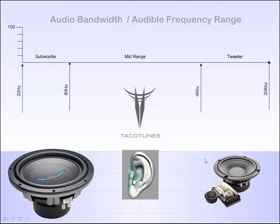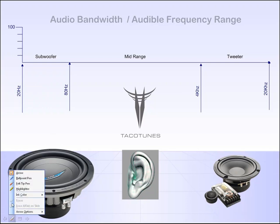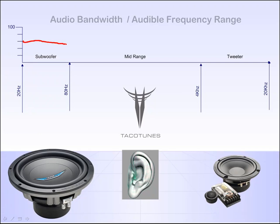Here we've got a subwoofer, a mid-range speaker, and a tweeter. The purpose of a subwoofer is to effectively produce this part of the sound frequency range — the subwoofer provides approximately 20 to 80 hertz. These are just roundabout numbers to give you guys a good idea. Then we have what's called a crossover point — the mid-range is going to take over from this point all the way to this point, and then there's another crossover where the tweeter takes over from there.